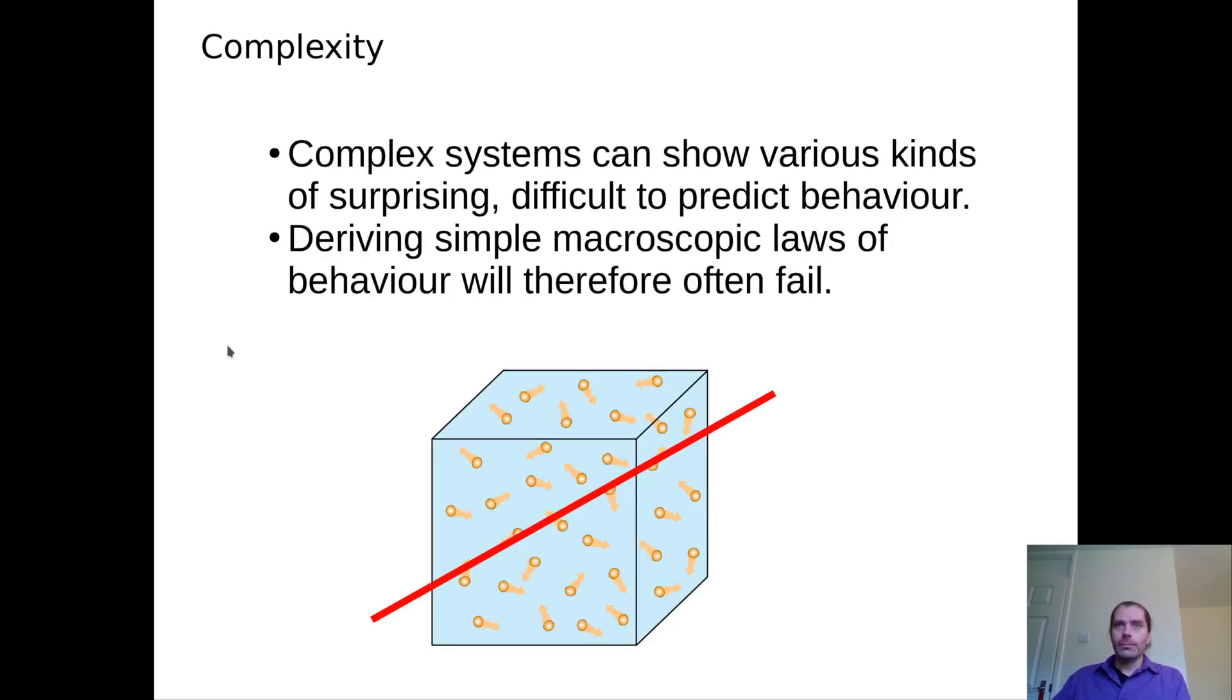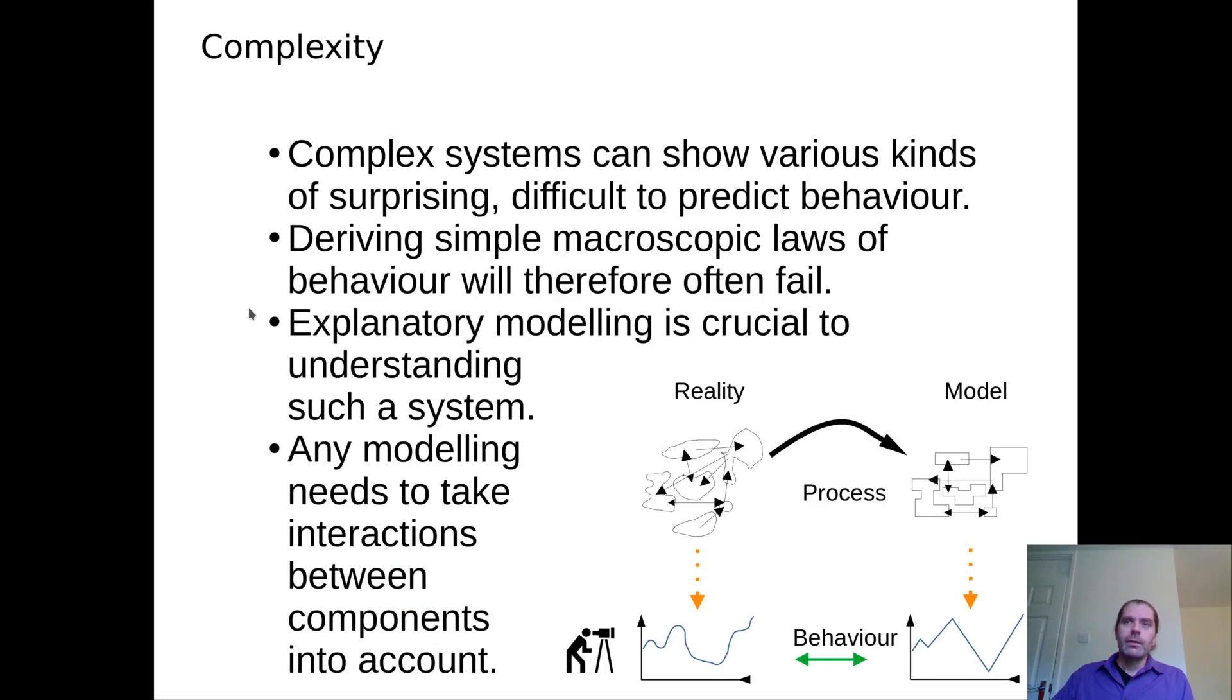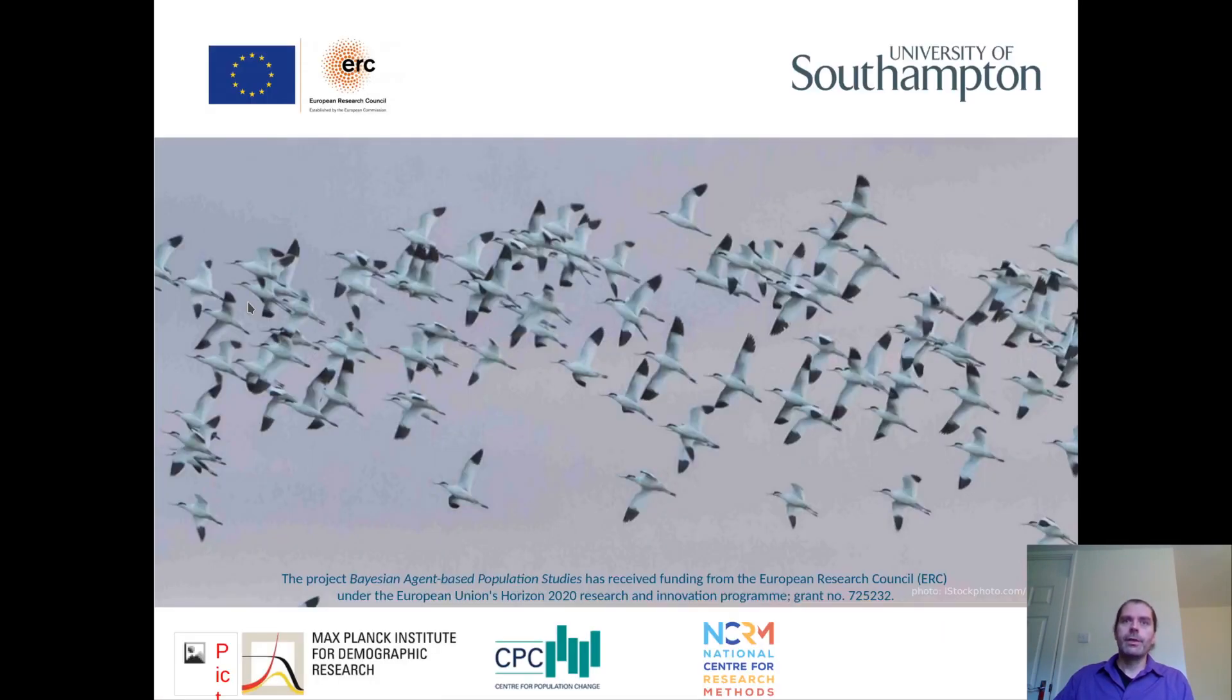So what we saw in this part of the talk was that complex systems can show various kinds of surprising behavior that makes them extremely difficult to predict under certain circumstances. That also means that deriving simple macroscopic laws of behavior for these systems will often fail. In particular, it will be extremely difficult to derive these macroscopic laws when knowing only the laws that govern the elements of the system. Therefore, explanatory modeling is crucial to understanding such a system, and any modeling in that context needs to take interactions between components into account. Thank you for listening.